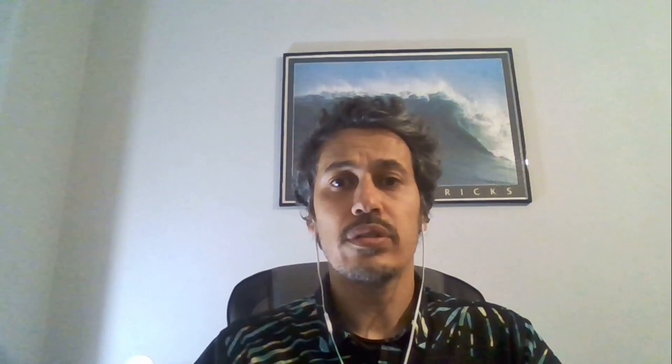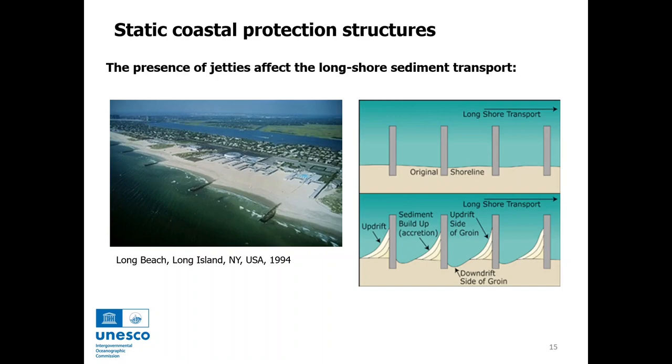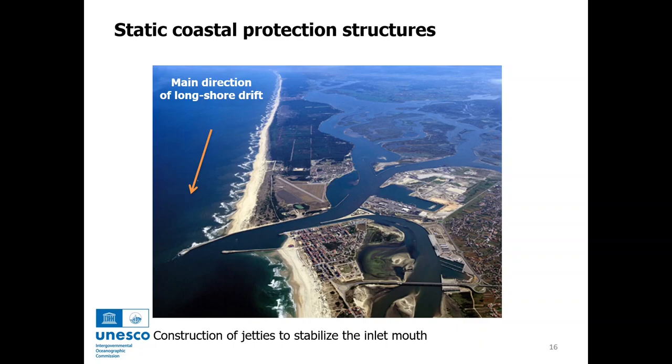Let's now take a look at another process: erosion due to static coastal protection structures. Coastal protection structures such as jetties or seawalls are standard approaches used to protect shorelines from erosion. However, there are some adverse effects of these features. The construction of jetties that prevent a given sector from losing sediments can affect the longshore sediment transport on a wider area. The downdrift side of a specific jetty can start to lose sediments, and this can have a cascade effect along the coast.